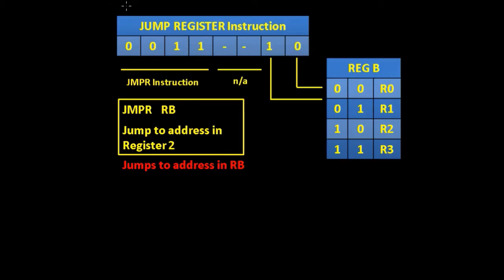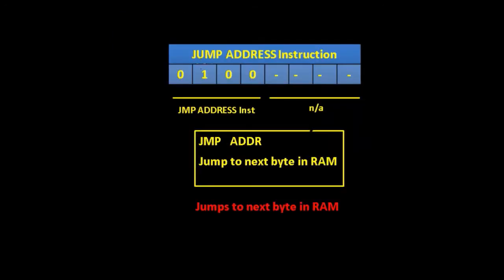Next we looked at the first of our jump instructions — jump register, given by 0, 0, 1, 1. We don't care about the middle two bits, and the last two bits chose REG B. The assembly language is JMPR RB, which changes program execution to jump to the address given in register RB. Our second jump instruction is jump address, given by 0, 1, 0, 0 — the last four bits are don't care. The assembly language is JMP ADDR, and it jumps to the address given in the next byte in RAM.